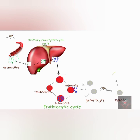The zygote becomes the ookinete, which becomes the oocyst, and finally sporozoites. These sporozoites migrate to the salivary gland of the mosquito and are ready to be deposited into the human circulation during the next blood meal.